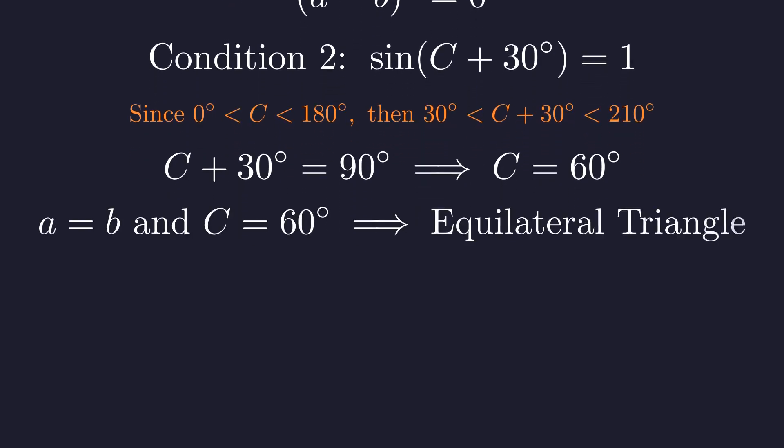So we have a triangle where two sides are equal, A equals B, and the angle between them is 60 degrees. That's the definition of an equilateral triangle.